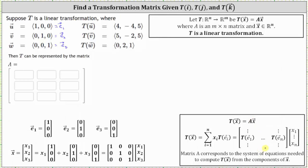So in our case, since the transformation of vector u — which is really e sub one — is equal to the vector (4, -4, 5), the vector (4, -4, 5) is the first column of the transformation matrix.